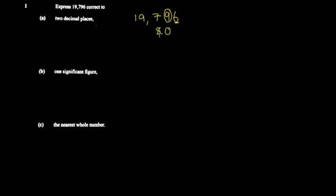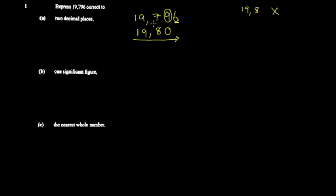So you get 19.80. The tricky thing is most students think the zero is insignificant, so they would write 19.8 — but that's wrong. Writing 19.8 communicates only one decimal place. When they say correct to two decimal places, they want to see two decimal places, so 19.80 is the correct answer.